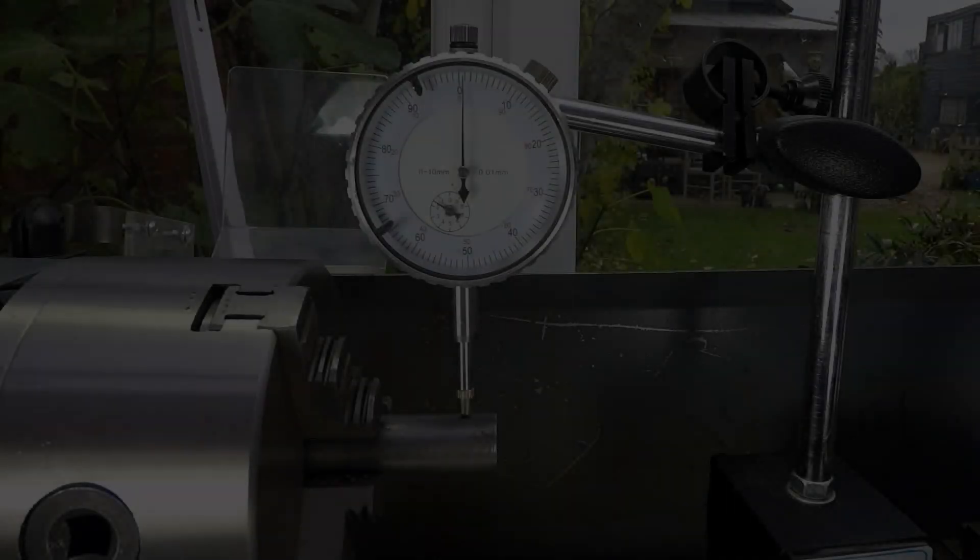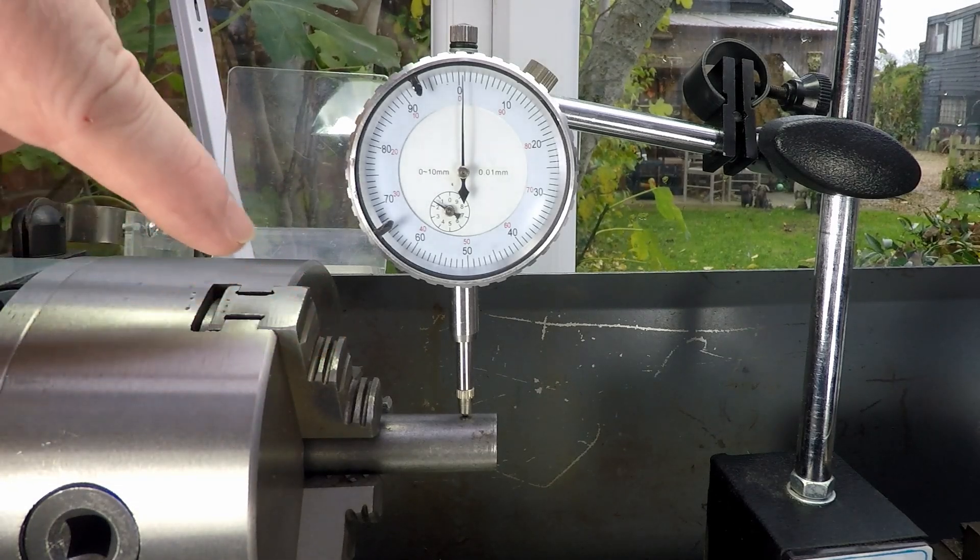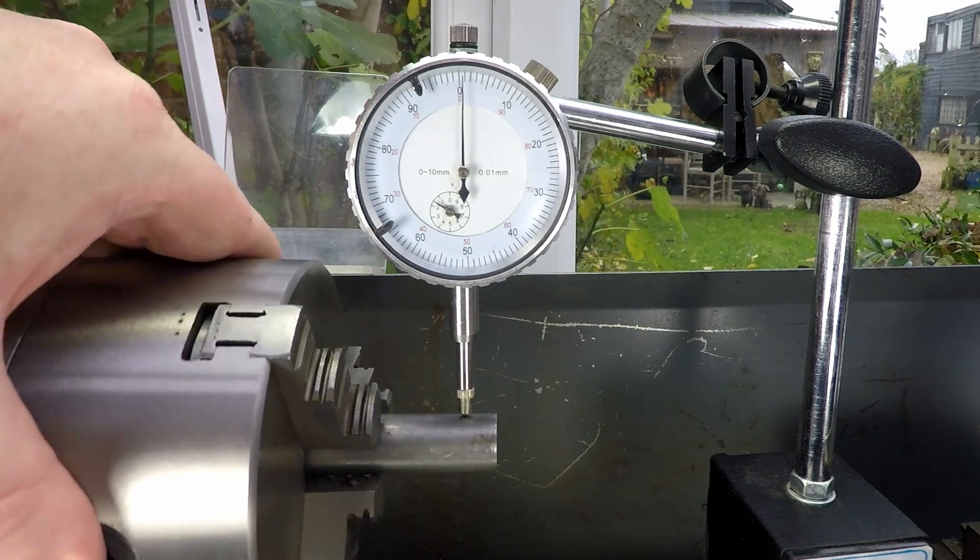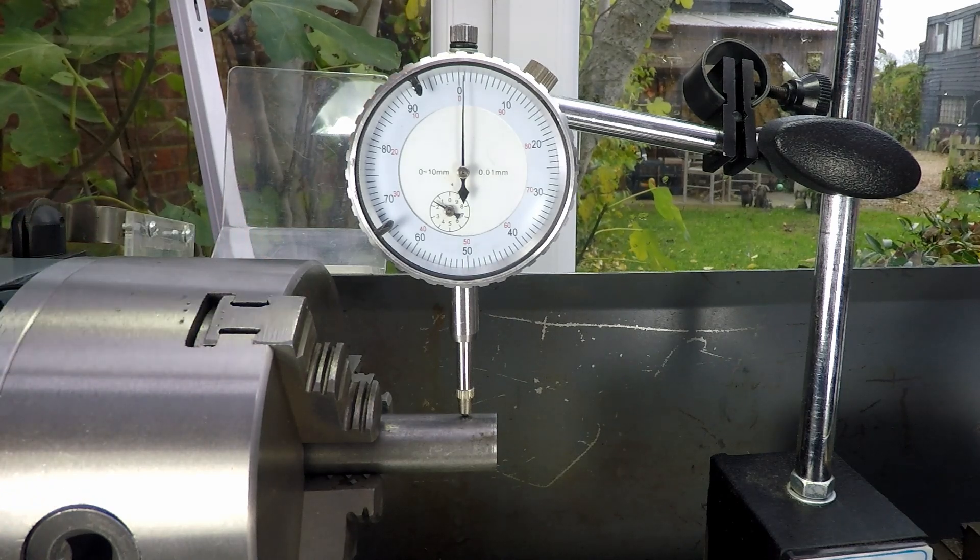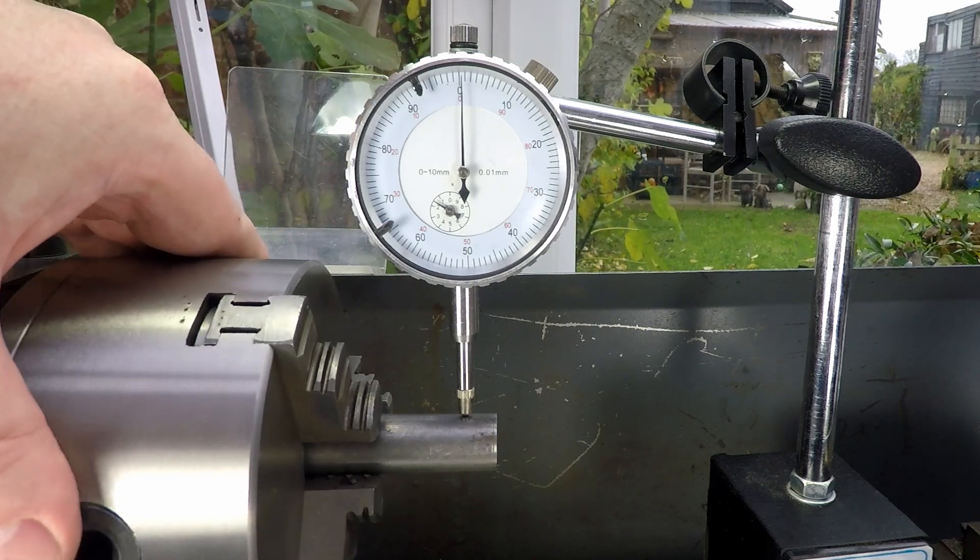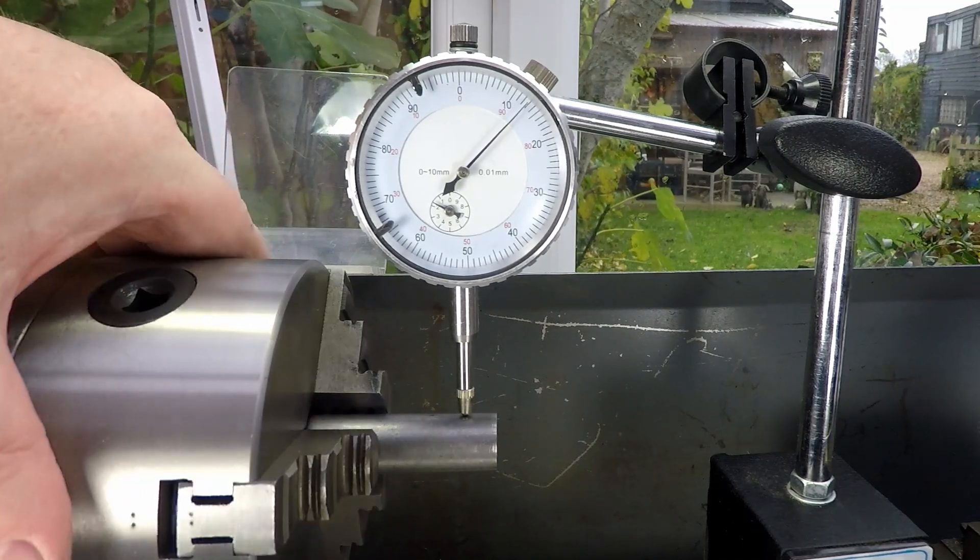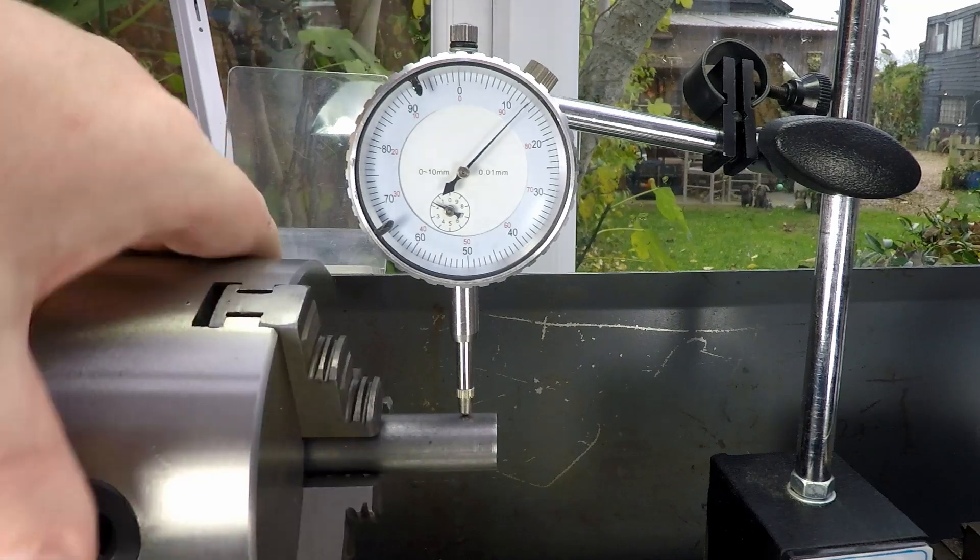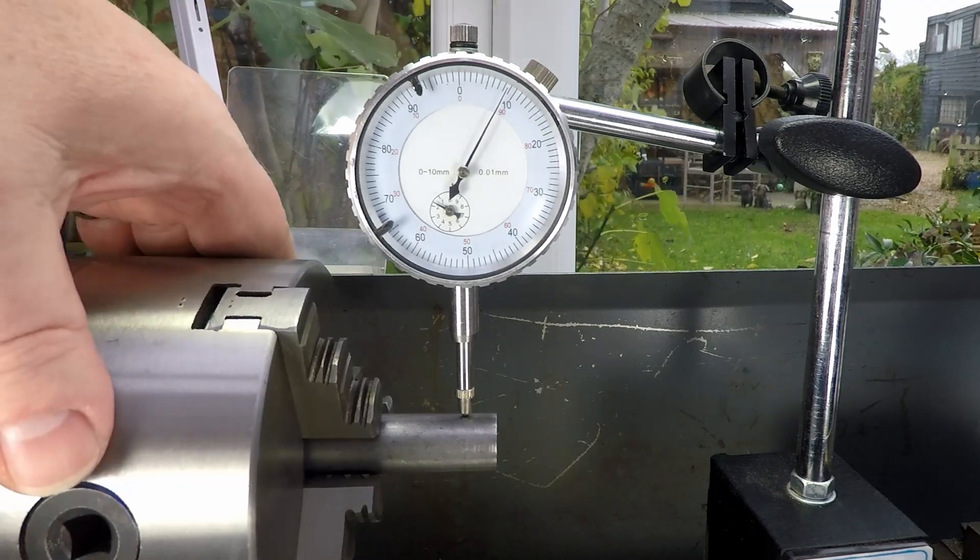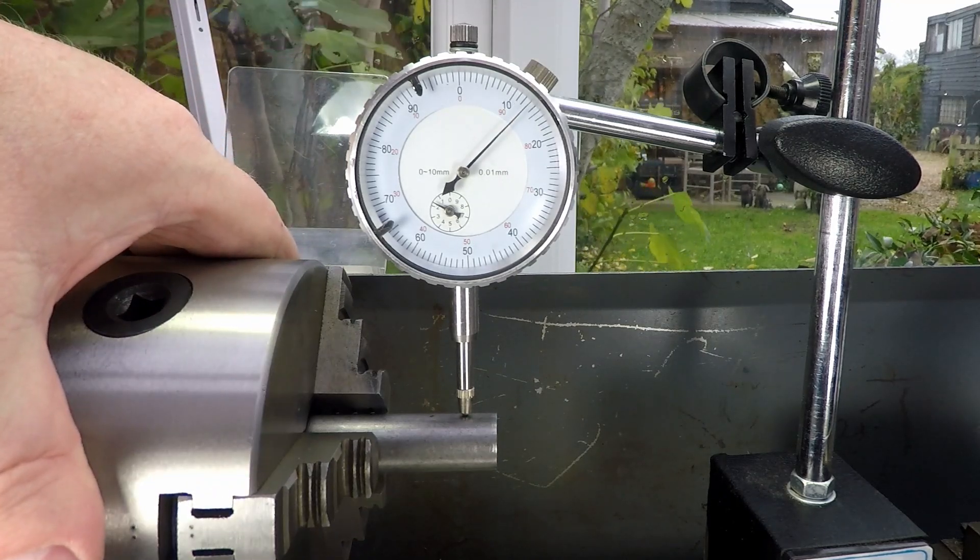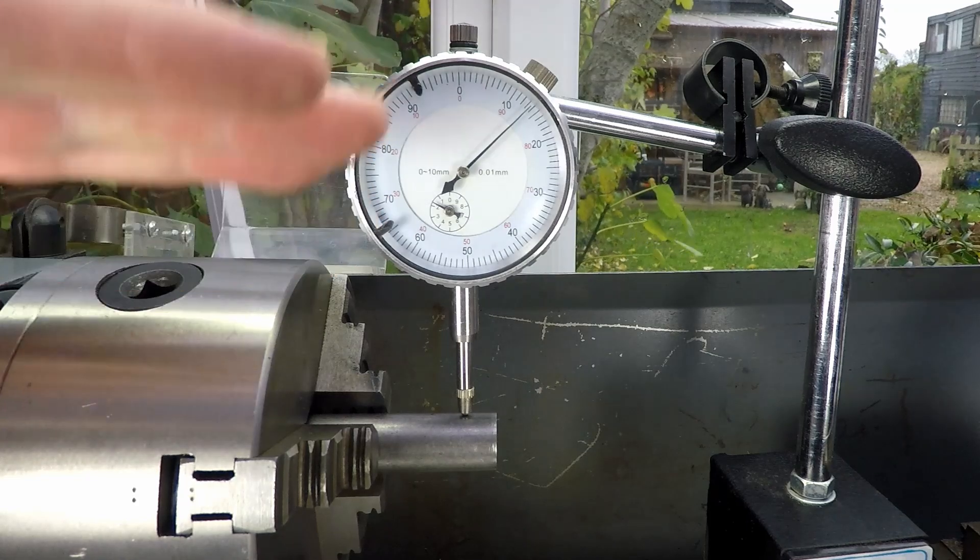I've got a dial gauge set up onto the piece of bar with the highest spot set to just about zero. Engineering on a budget—that's the name of this channel. We're about zero. If I rotate the work, you can see we've got some runout—about 0.14mm of runout. It goes down to about 0.01, up to about 0.13, so probably about 0.12mm of runout. That's going to affect the measurement we were taking.